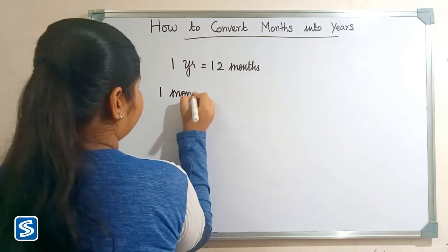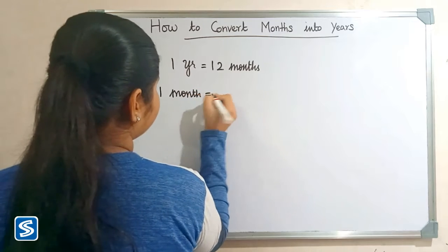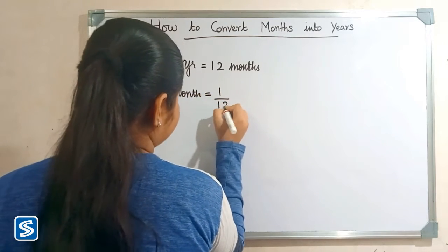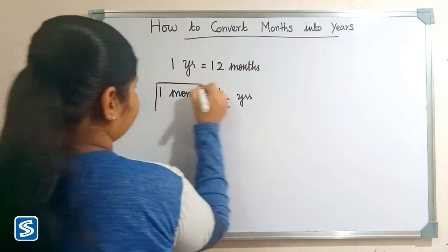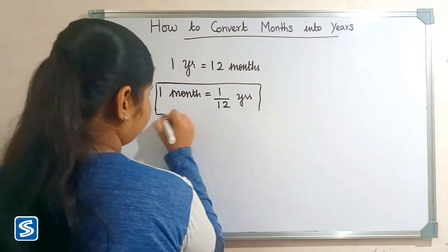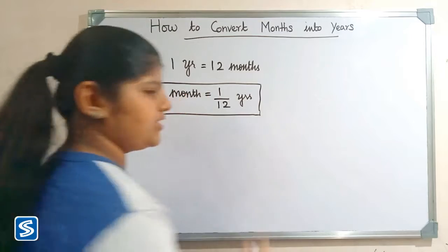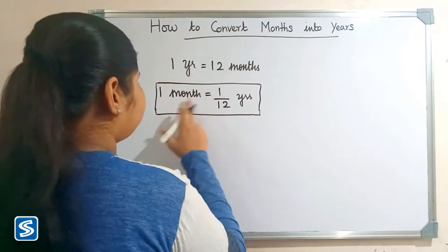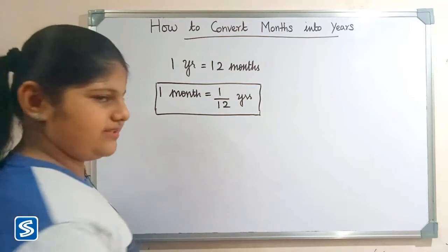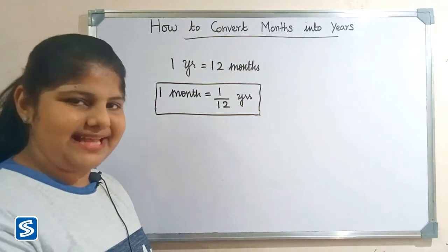One month is equal to 1/12 years. So the formula for converting months into years is: 1 month = 1/12 years. Now we will take some examples.